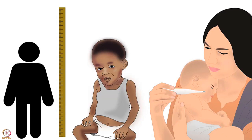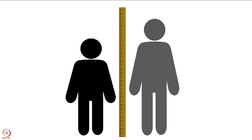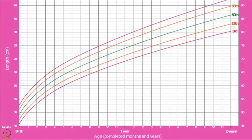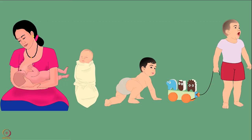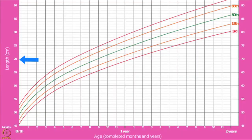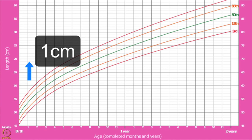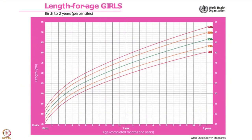Children who are stunted might have had prolonged undernutrition or repeated illness. Children who are tall for their age can also be identified. In these charts, the X-axis shows age, plotted in weeks and months from birth until 2 years. The Y-axis shows length in centimetres. The thin grey horizontal lines represent an increase in length by 1 centimetre.